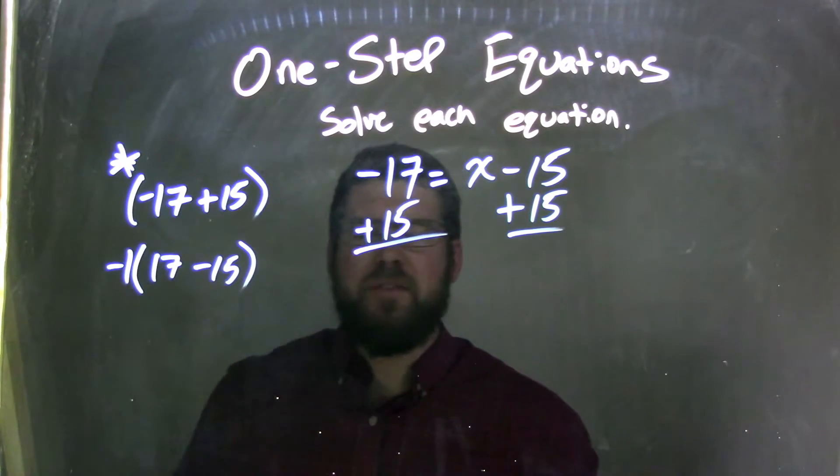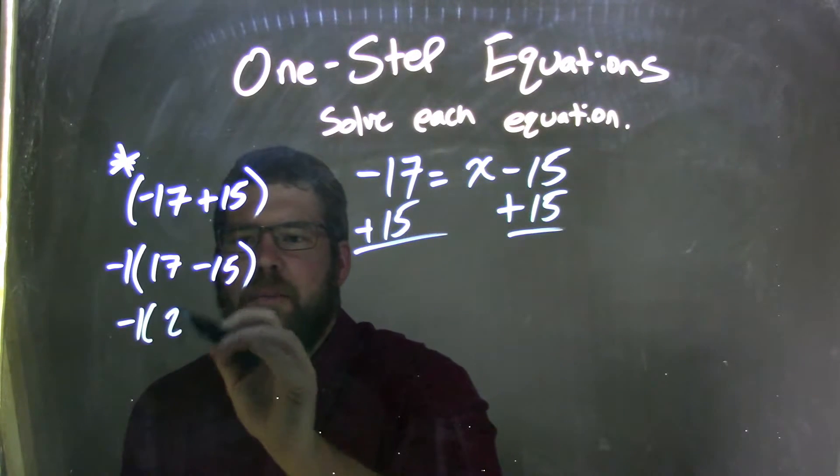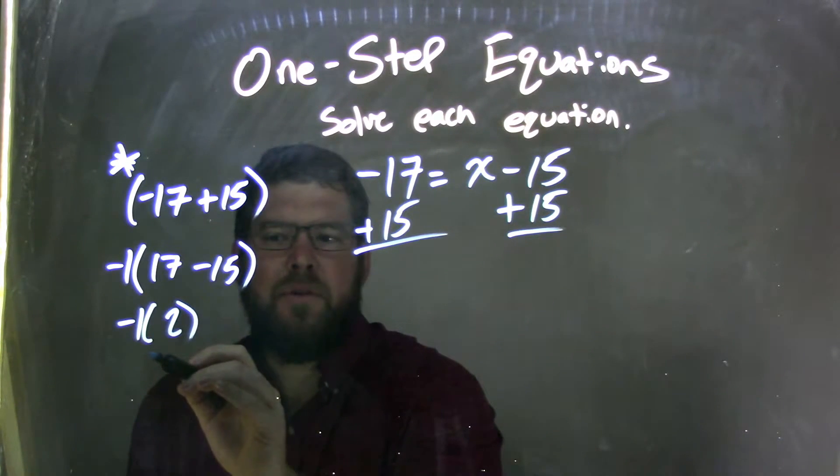Well, now that becomes pretty simple to solve. 17 minus 15 is 2, right? So negative 1 times 2, and what's negative 1 times 2? Well, negative 2.